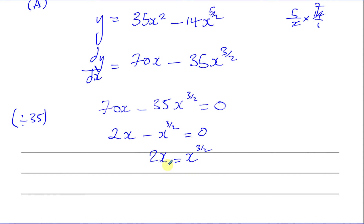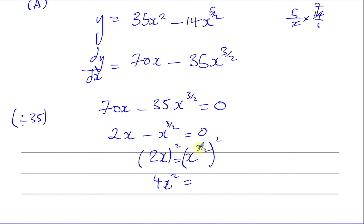Now I'm going to square both sides to get rid of this 3 over 2 power — the square root. Squaring gives 4x squared on the left. On the right, squaring x to the power of 3 over 2 multiplies the power by 2: 3 over 2 times 2 gives 3, so that's x cubed.